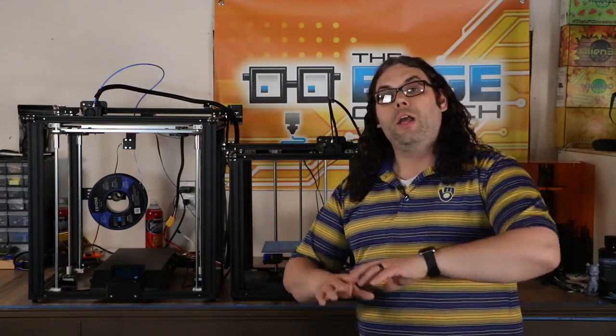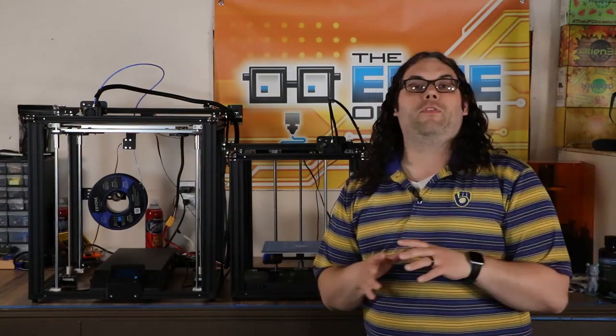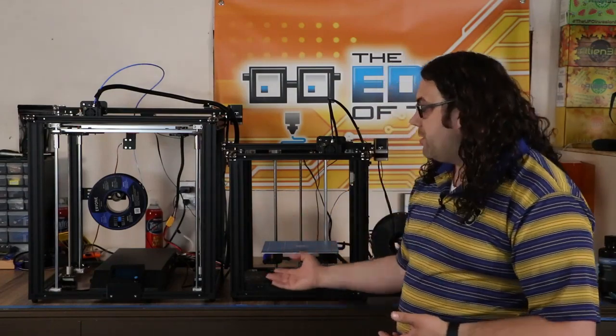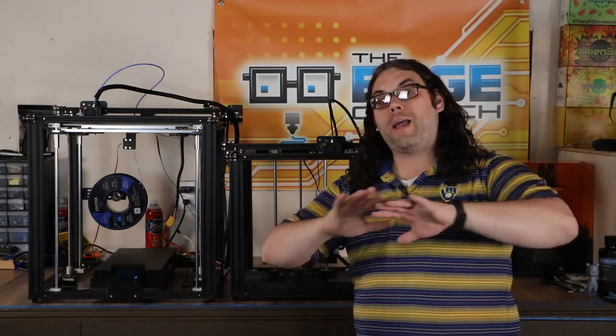Both of these have a ton of upgrades out there because they've been out for a while. Printable and buyable upgrades that you can do pretty much everything on, from linear rails to different hot ends to a whole bunch of printable parts like I've done videos on in the past, and that's going to be awesome on both printers because you, right out of the gate, you can do whatever you want to these things.